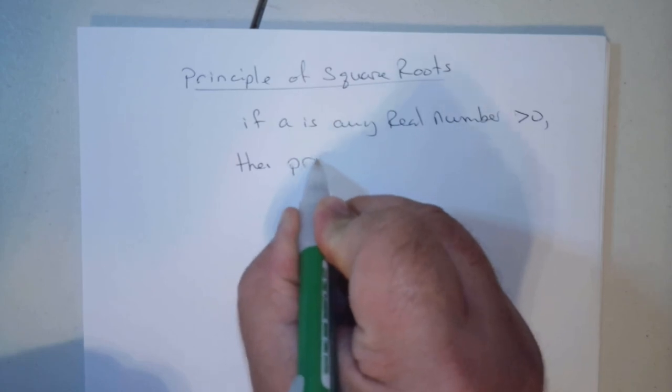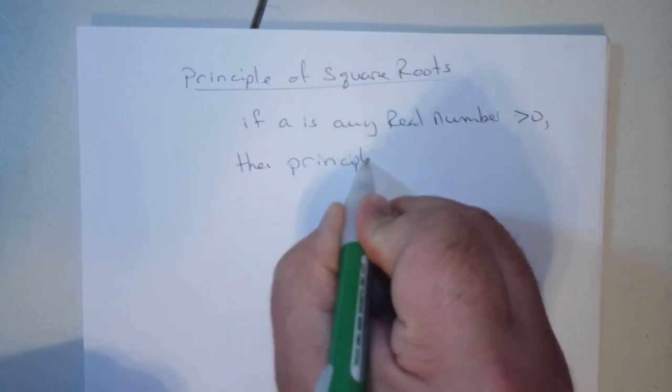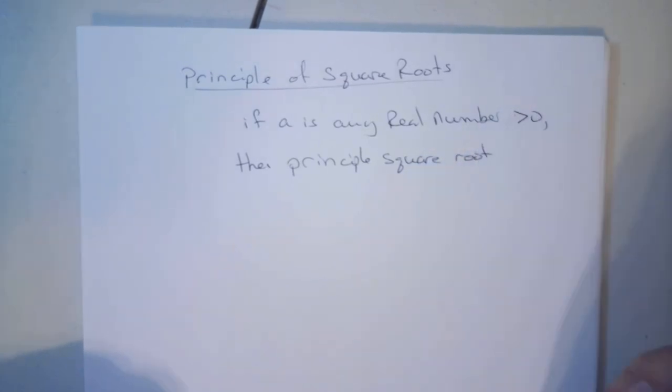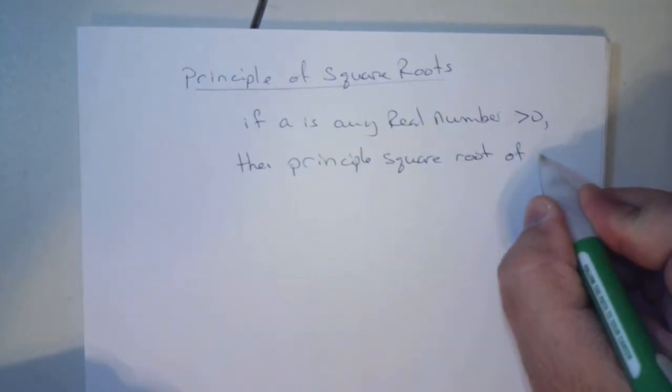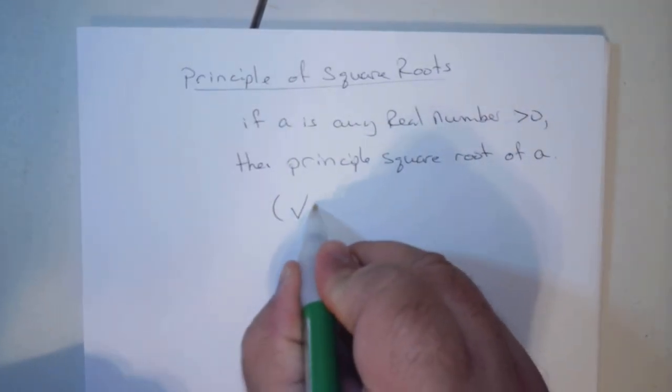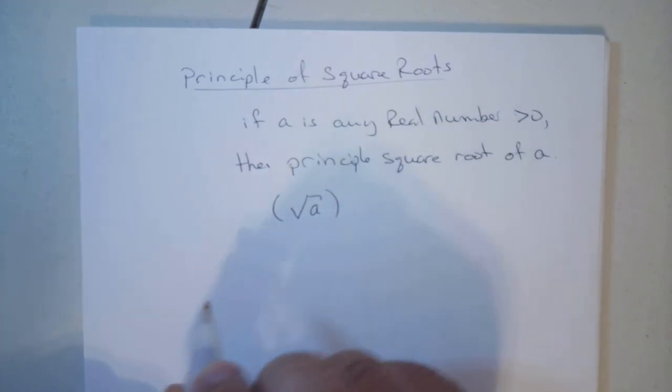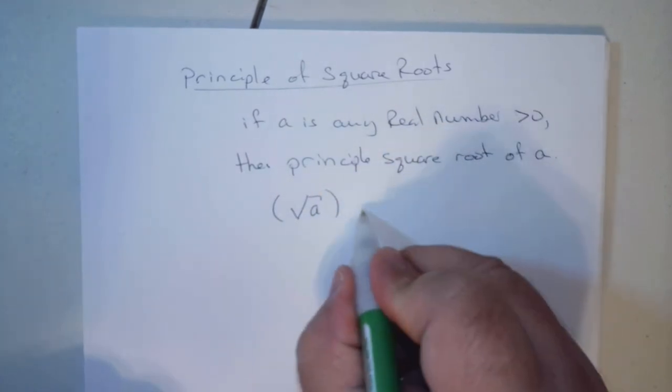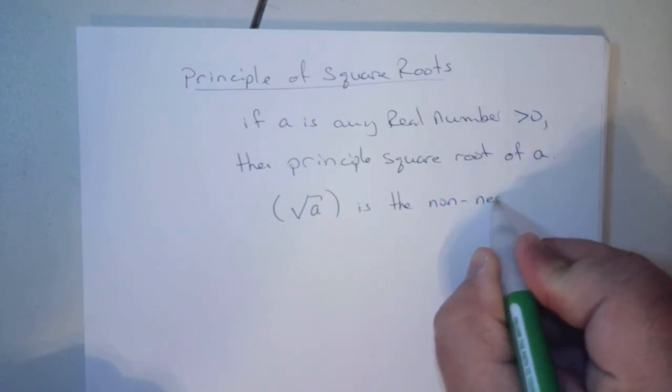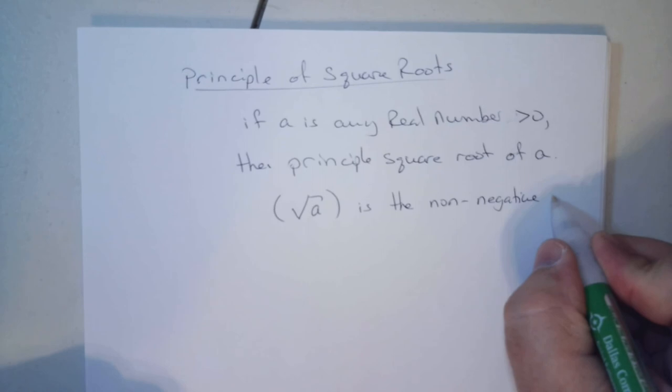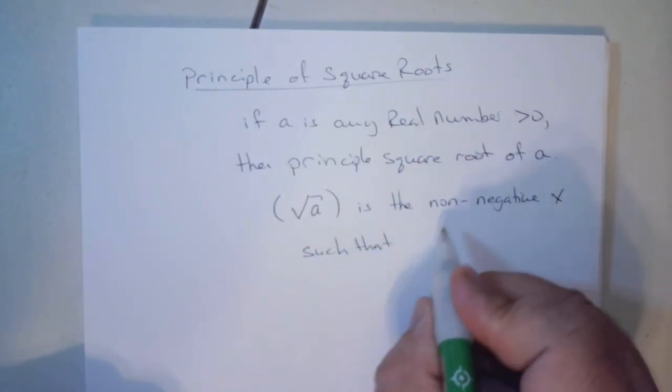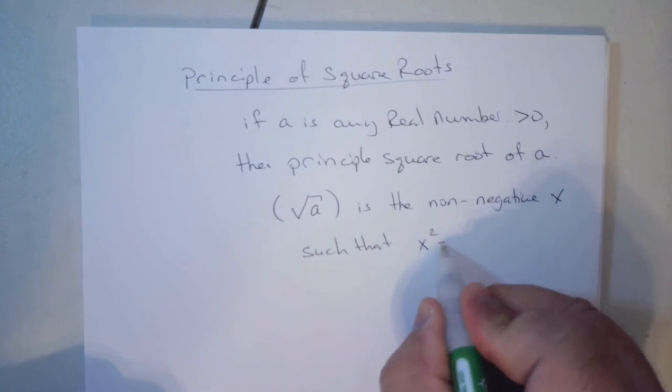The principle square root of a is the non-negative x such that x squared equals a.